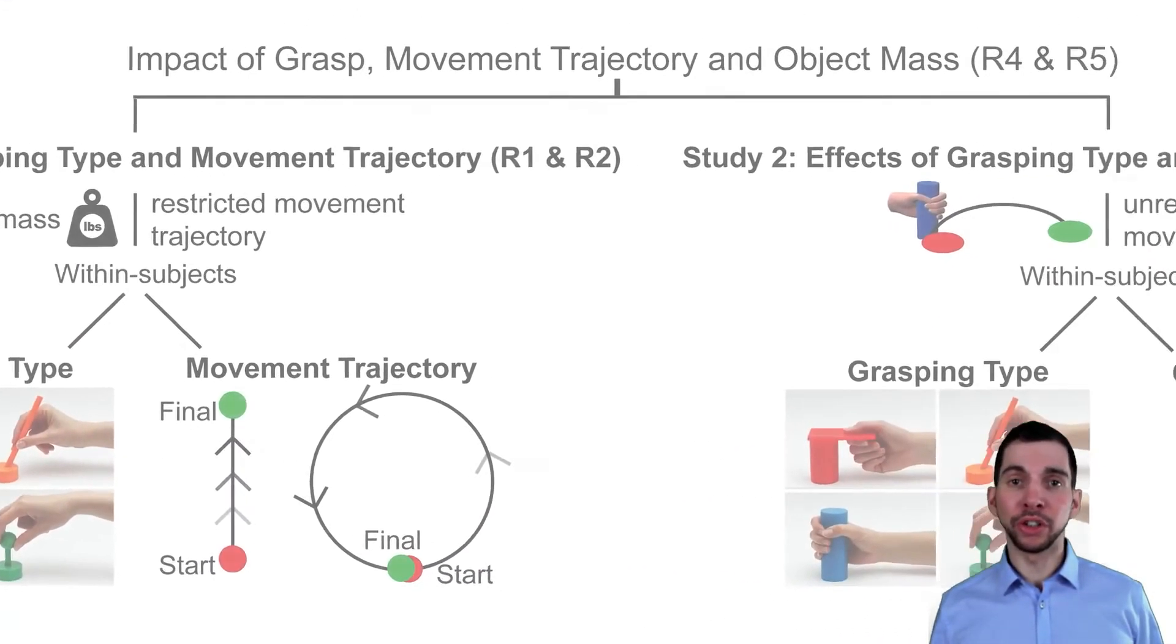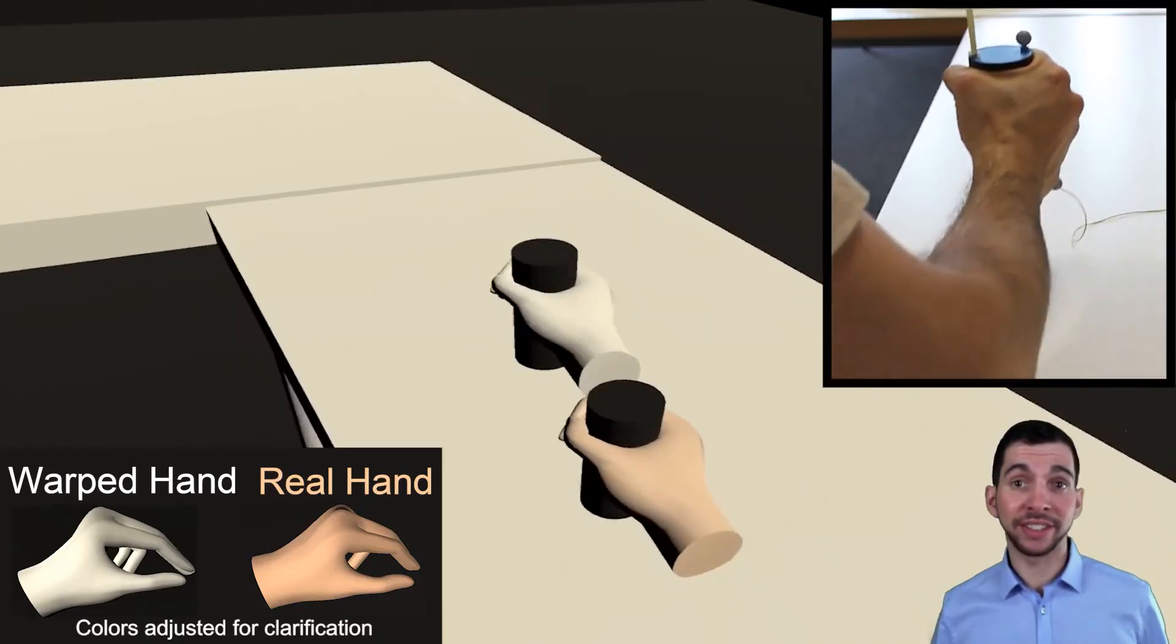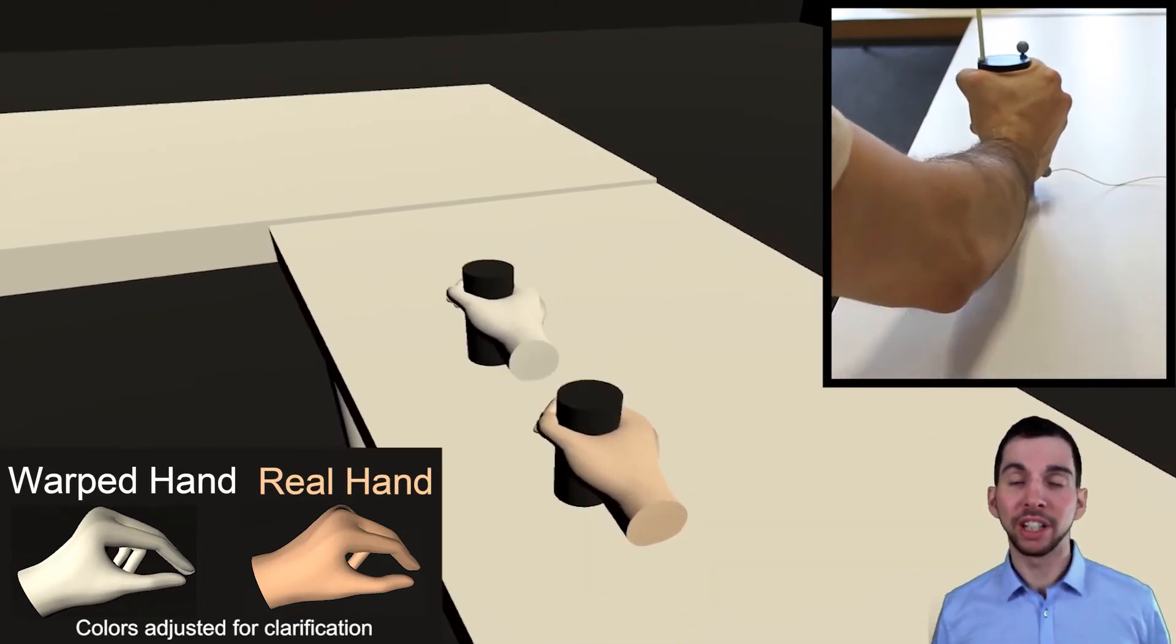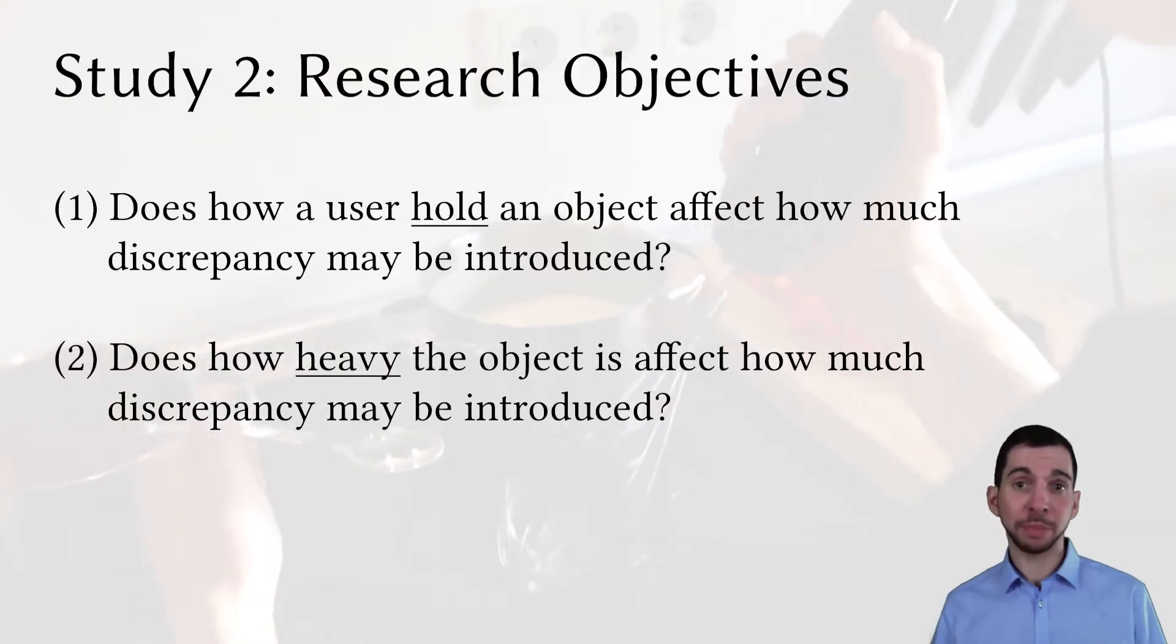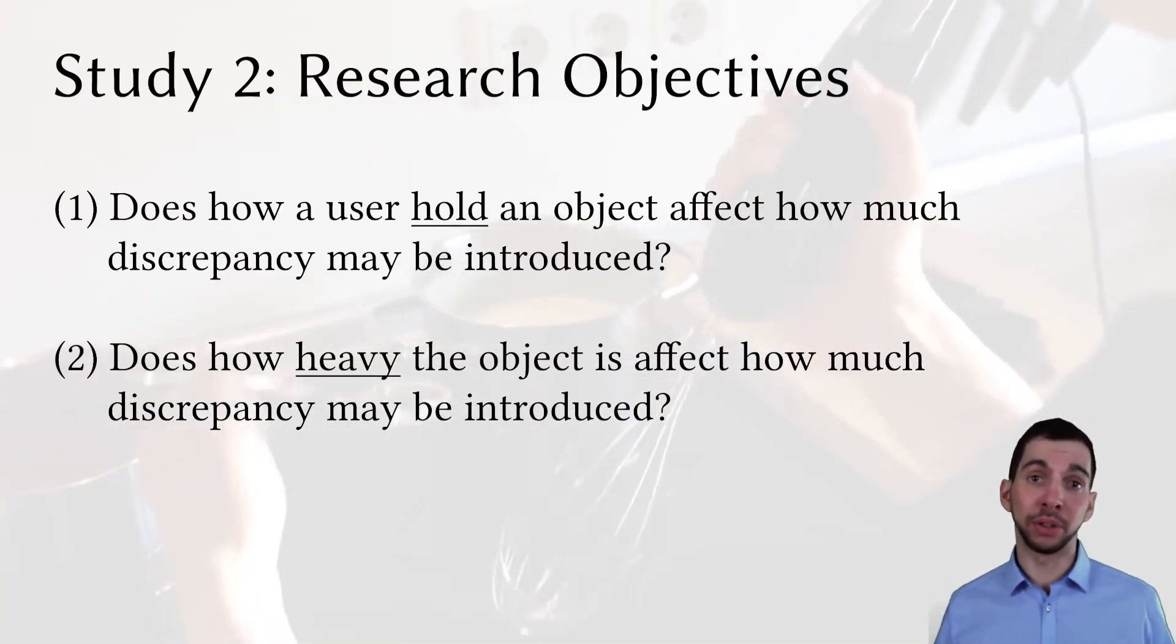In study 2, we recruited a new set of 24 participants and looked at unrestricted movements, comparing again our four grasping types and object masses up to 500 grams. We used the same method as in study 1, however this time participants were completely free in their movement, leading us to the following research objectives. Does the grasping type or the weight of the object affect the possible discrepancy?